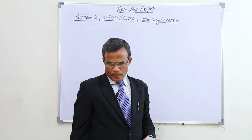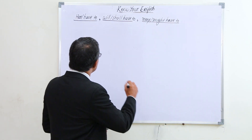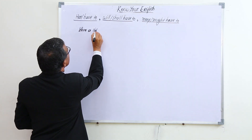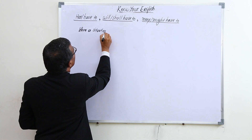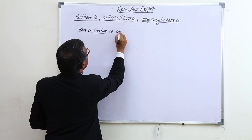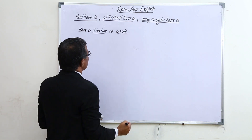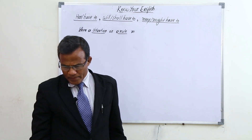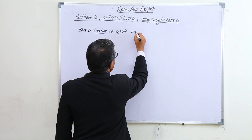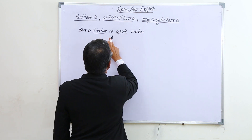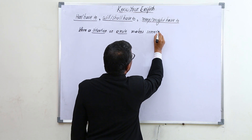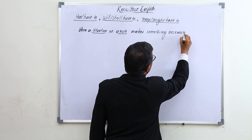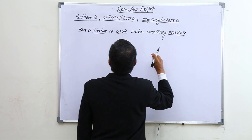These expressions — 'has to / have to / will have to / shall have to / may have to / might have to' — are used only when a situation or a rule makes something necessary.